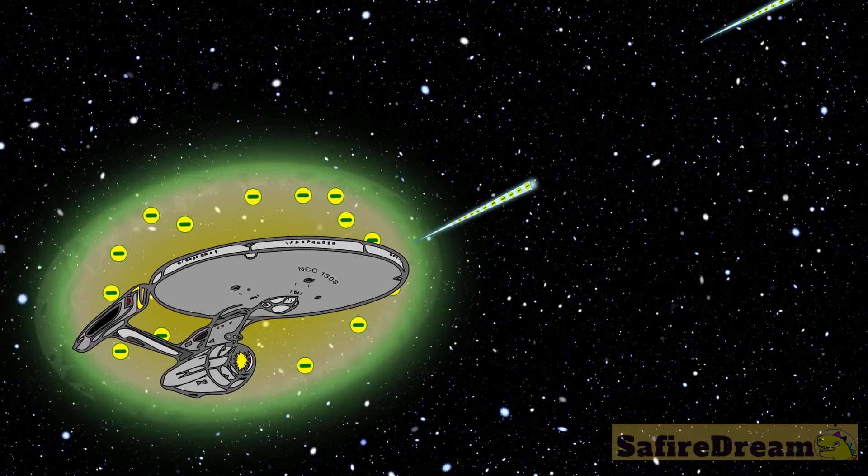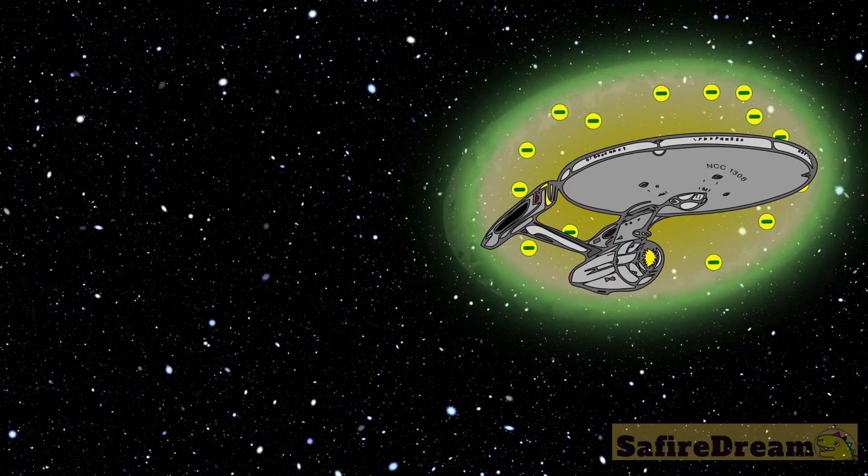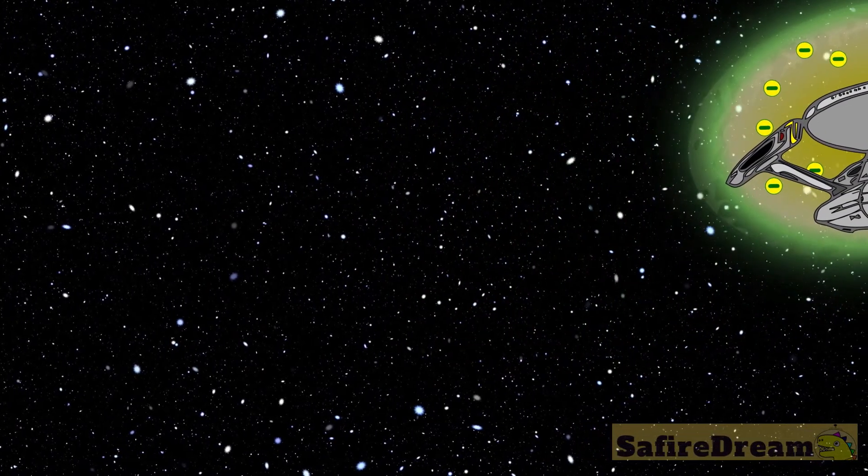So yeah, we can think of a small comet as kind of like a starship with its shields up. Food for thought!